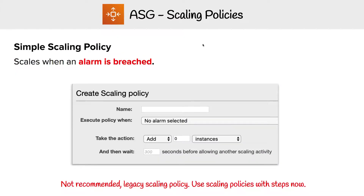The second type of scaling policy is simple scaling policy. This scales when an alarm is breached. We create whatever alarm we want and choose it here, and we can tell it to scale out by adding instances, or scale in by removing instances.